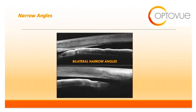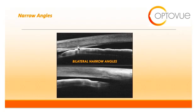On this slide, you can see what a narrow angle looks like on OCT. You can see the anterior placement of the ciliary body in apposition to the cornea. The angle here is completely closed off, as we are not able to put calipers in to measure the distance between these two structures.